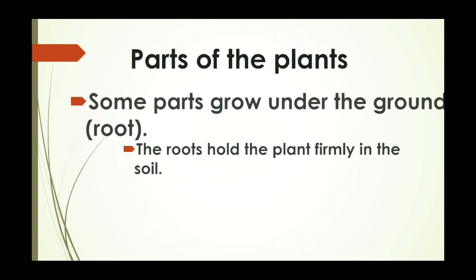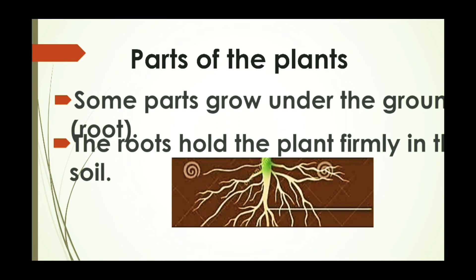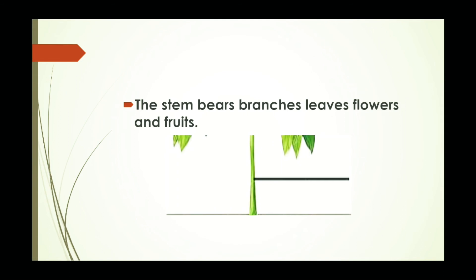Next, this is root. These are roots which grow under the soil. And the stem bears branches, leaves, flowers and fruits. Some of them grow above the ground, like stem. Root grows under the soil, under the ground. And other parts are grown above the ground. Which are these? First one is stem, then branches, leaves, flowers, fruits. But the stem bears branches, leaves, flowers and fruits. So this is the main work of the stem.